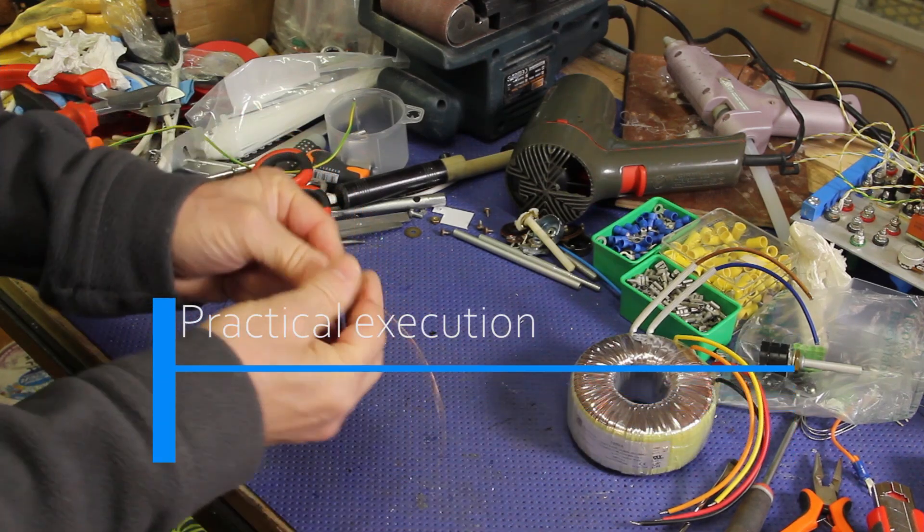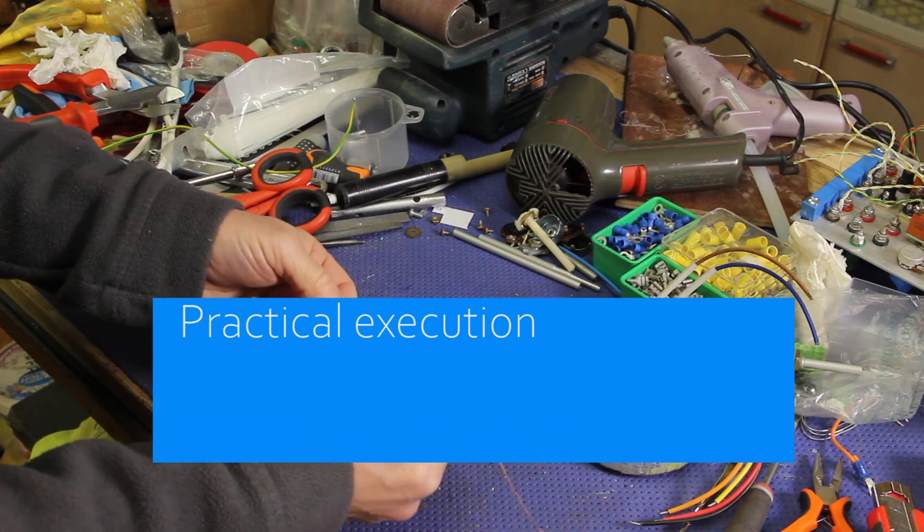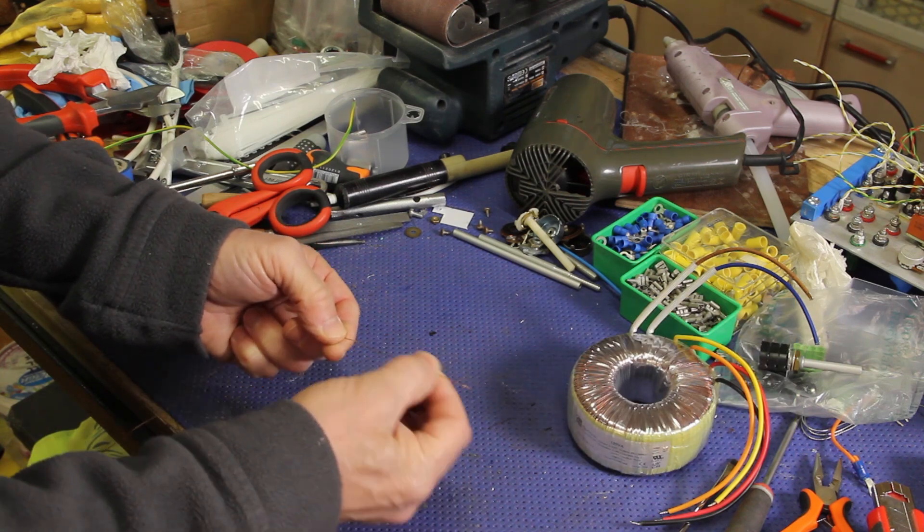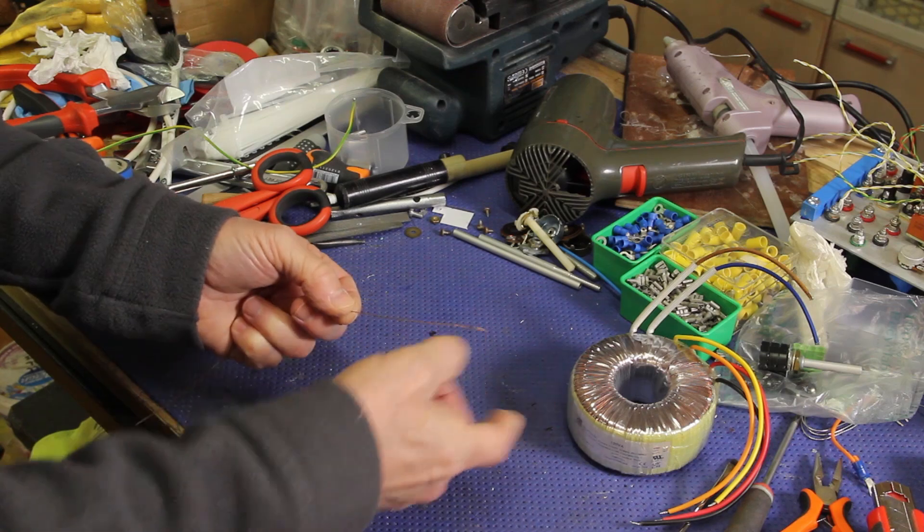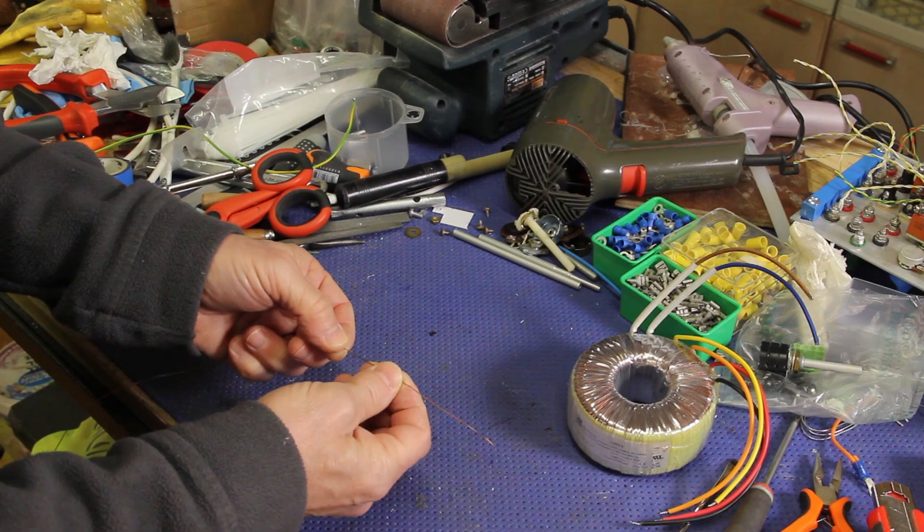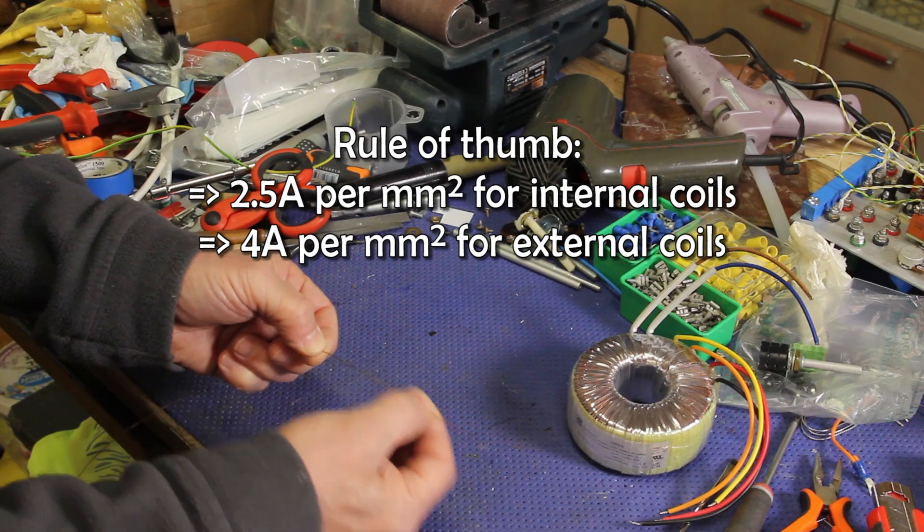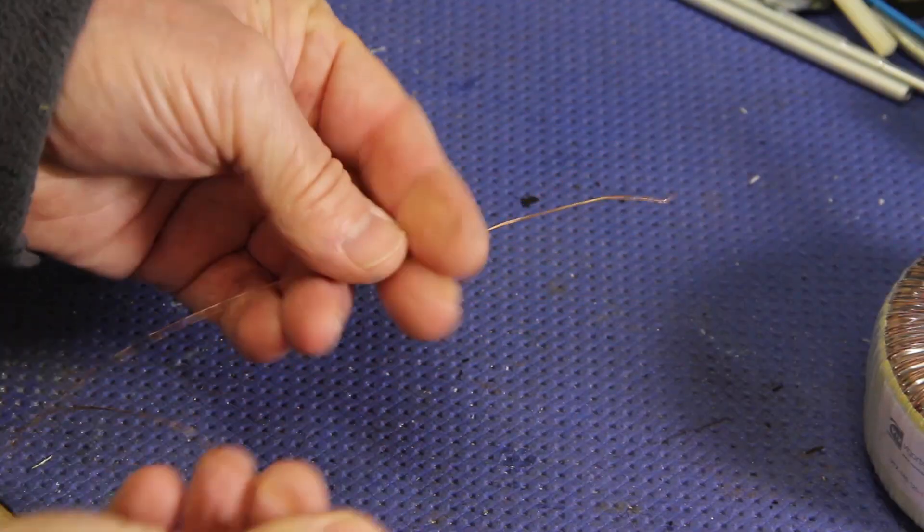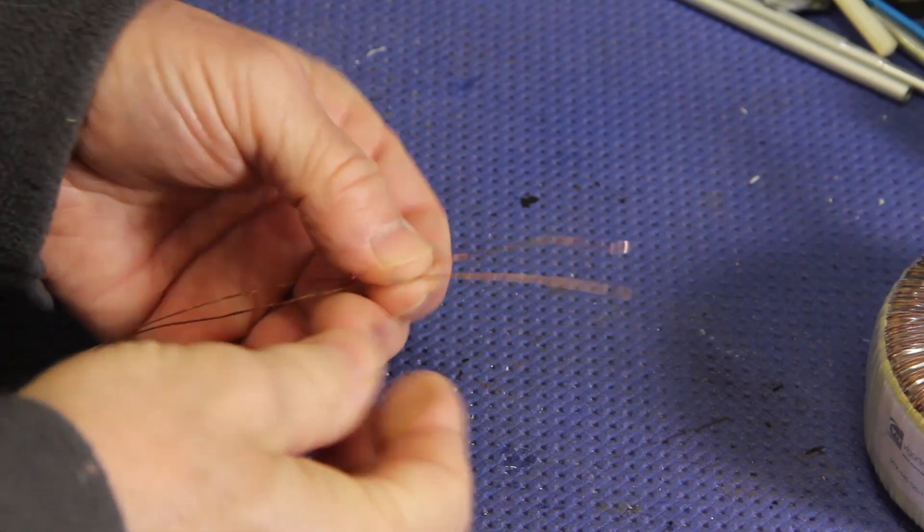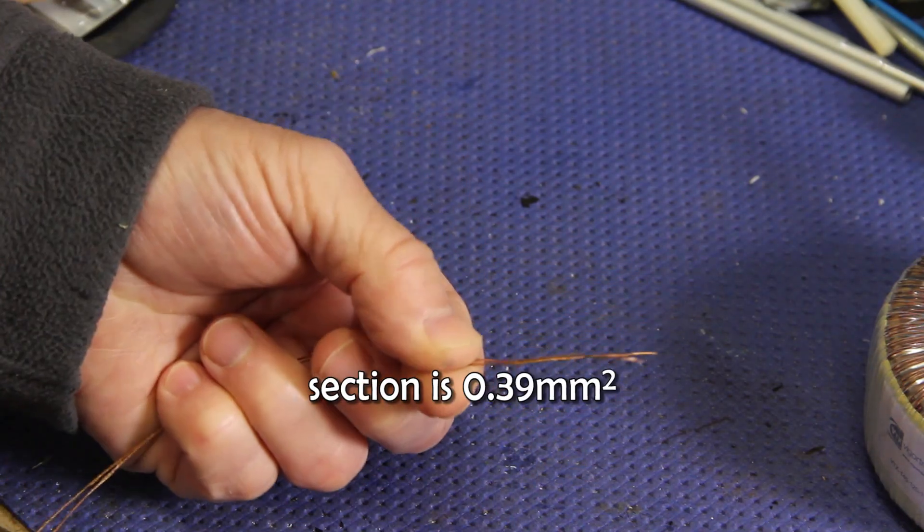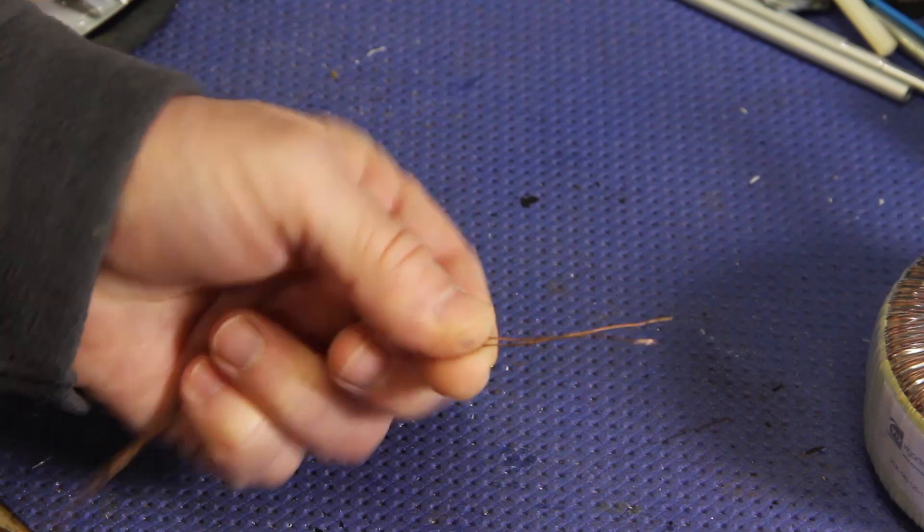Now I have this thin wire, it is an enameled wire, but it is too thin, it is only 0.5 millimeters and for the current that I want I need about 0.7, 0.8 millimeters. So my solution is to put two wires in parallel, so that we will reach the diameter required to carry the current.